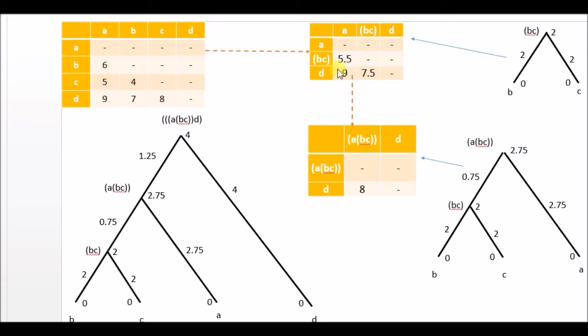So here I got 6 plus 5 is 11, divided by 2 is 5.5. And again the same thing will happen here for D to BC. So here are the two values 7 plus 8, so I added these two and divided by 2, I got 7.5.